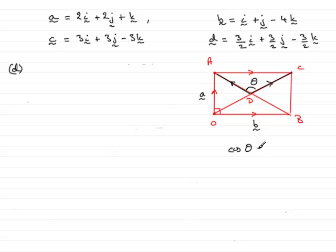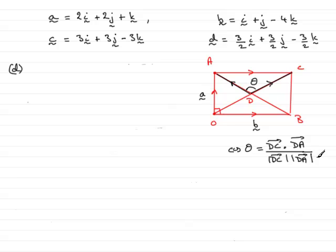The scalar product formula gives cos theta equals the vectors DC dotted with DA, over the magnitude of DC multiplied by the magnitude of DA. This is a formula you should know and be able to use when finding the angle between two vectors. It is very important that you have these two vectors coming away from the angle.